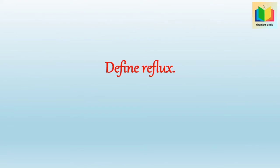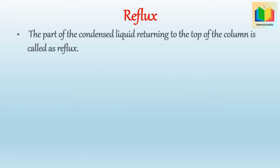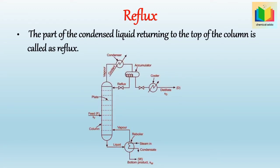Define reflux. The part of the condensed liquid returned to the top of the column is called reflux. As shown in the figure, a part of the condensed liquid is returned to the column, and the remaining part is withdrawn as the top product or distillate, which is rich in the more volatile component.